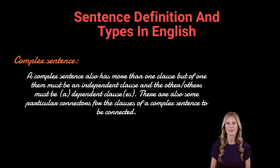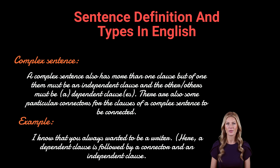A complex sentence also has more than one clause, but one of them must be an independent clause and the others must be dependent clauses. There are also some particular connectors for the clauses of a complex sentence to be connected. Example: 'I know that you always wanted to be a writer.' Here, a dependent clause is followed by a connector and an independent clause. The other way around is also possible.